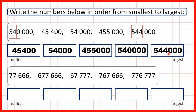And then 544,000 is our largest number. Now we have 77,666, 677,666, 67,777, 767,666, and 776,777.